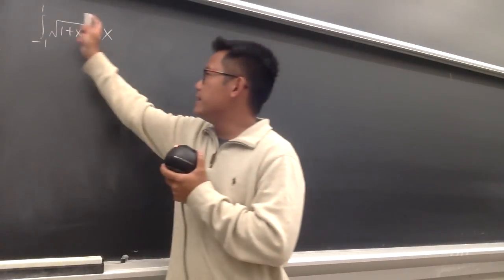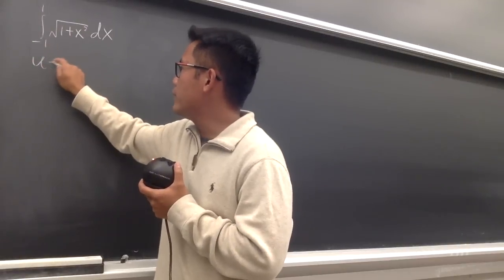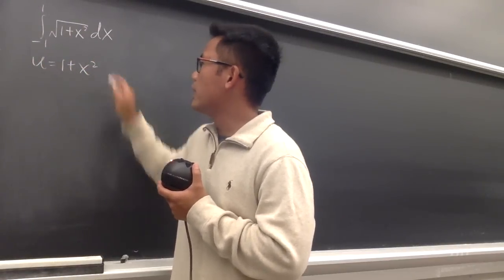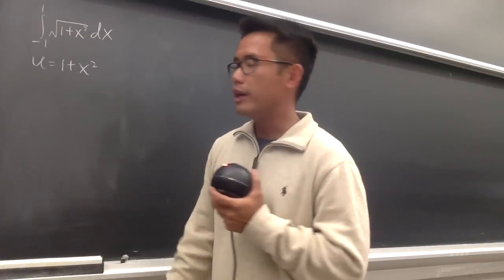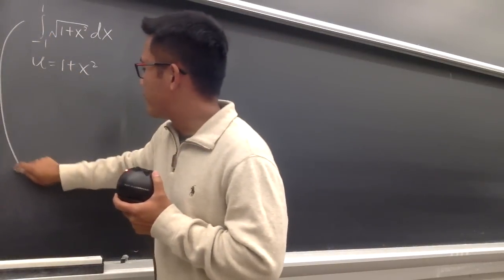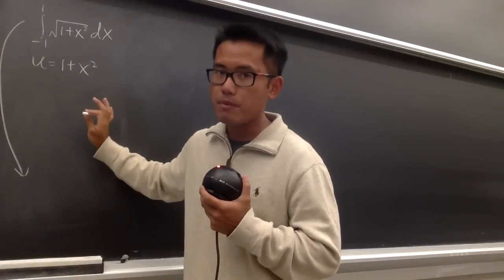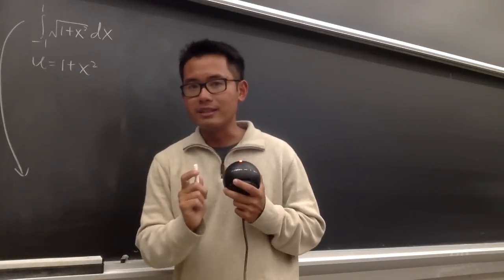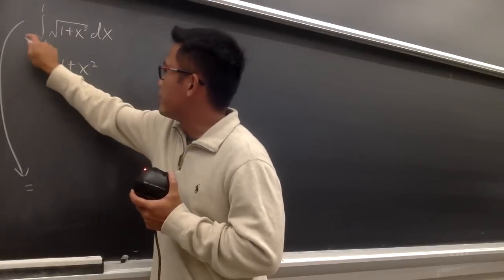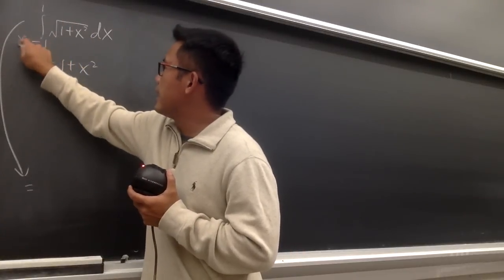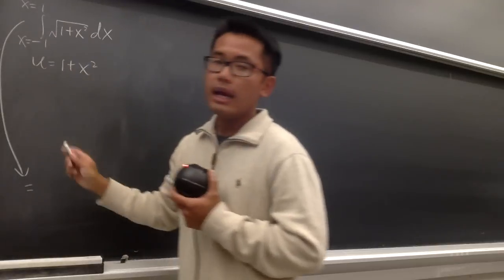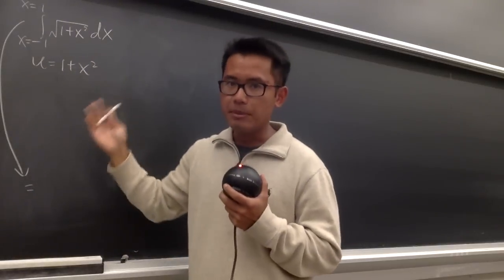If you look at this integral and decide to let u equal 1 plus x squared, you will end up with the following situation. Without further calculation, you will see something really interesting. You know this is x equal to negative 1 up to x equal to 1. Let's change the limits first.